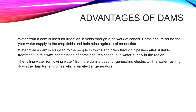Water from a dam is also supplied to people in towns and cities where there are no local water resources, through pipelines after suitable treatment. Dams can also be used for the generation of electricity — hydroelectric power generation.